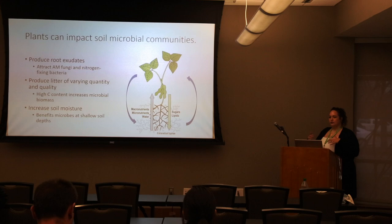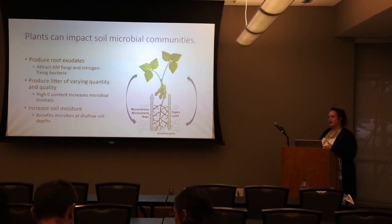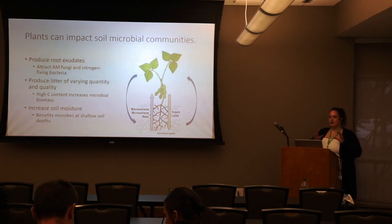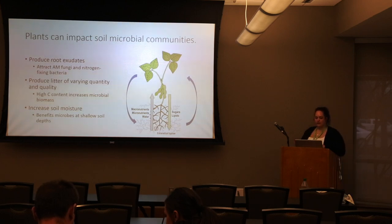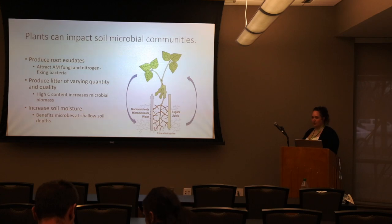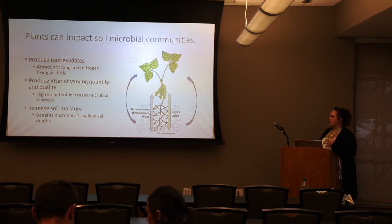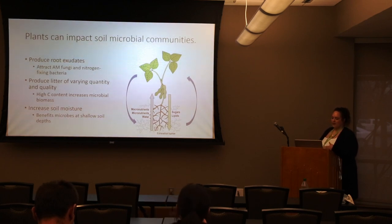Plants can cultivate their own unique microbial communities by producing carbon-rich root exudates, which help attract mycorrhizal fungi and nitrogen-fixing bacteria. Plants also influence their microbial communities through the quantity and quality of the litter they produce — when plants drop their leaves, or in the case of cover crops, when they're terminated at the end of the season.